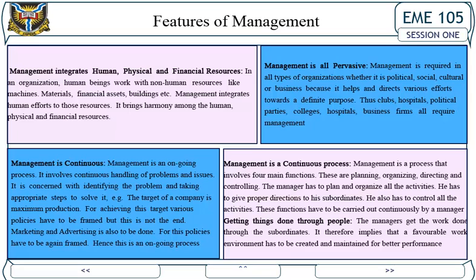Management is a continuous process that involves four main functions: planning, organizing, directing, and controlling. The manager has to plan and organize all activities, give proper directions to subordinates, and control all activities. These functions have to be carried out continuously. Managers get the work done through subordinates, which implies that a favorable work environment must be created and maintained for better performance.